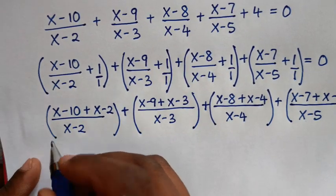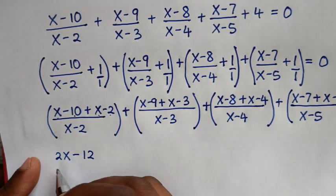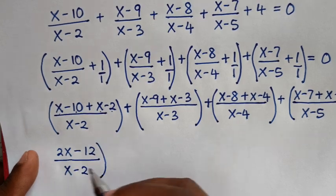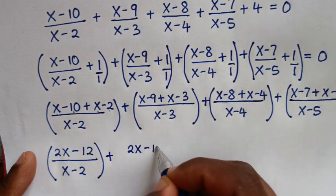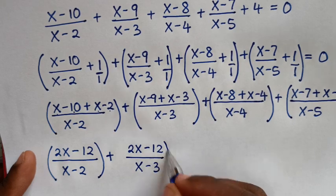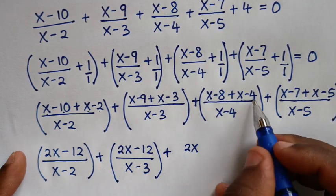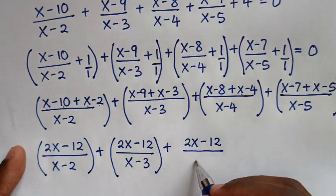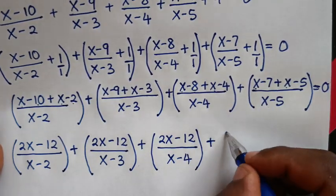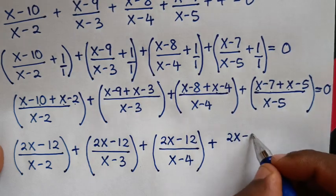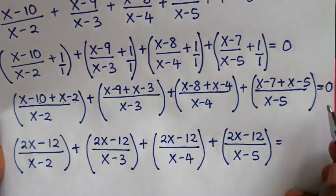In the next step, combining the numerators: x plus x is 2x, and minus 10 minus 2 is minus 12, giving 2x minus 12 over x minus 2. Similarly, 2x minus 12 over x minus 3, plus 2x minus 12 over x minus 4, plus 2x minus 12 over x minus 5, all equal to 0.